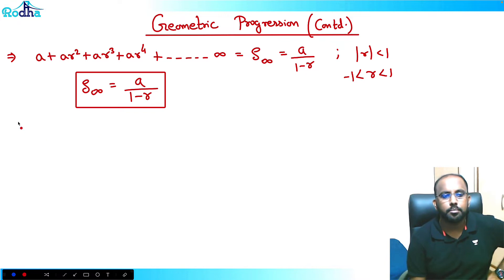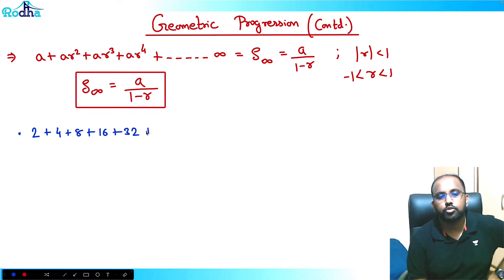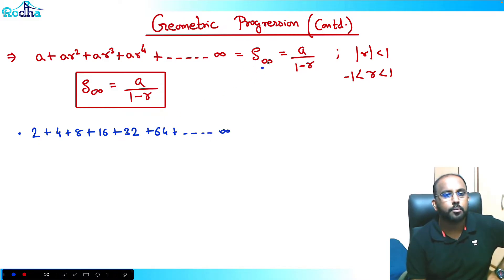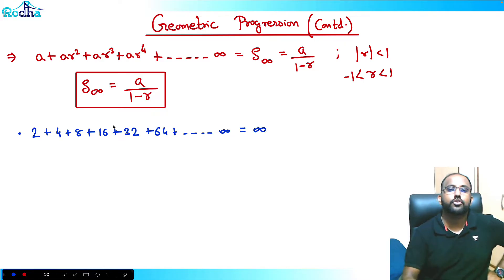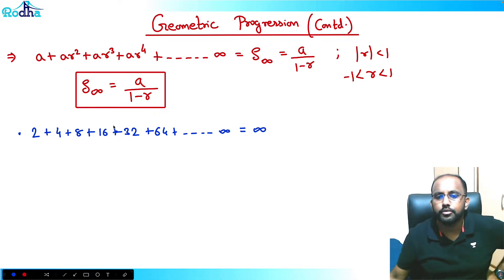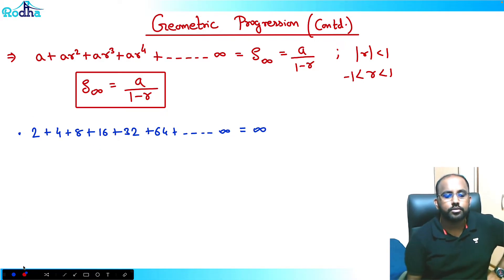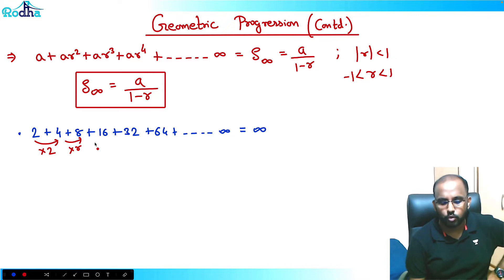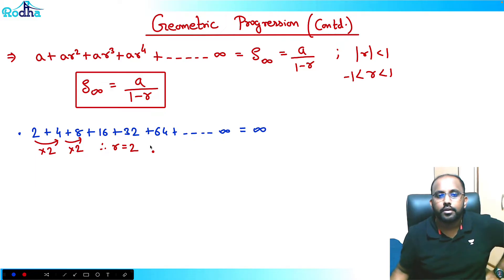For example, if we have 2 + 4 + 8 + 16 + 32 and it goes on to infinity, I don't need to apply the formula here. By common sense, the sum will be infinity only — 2, 4, 8, 16, 32, 64 keeps going. This is because the common ratio r is 2 here, so the series keeps growing.